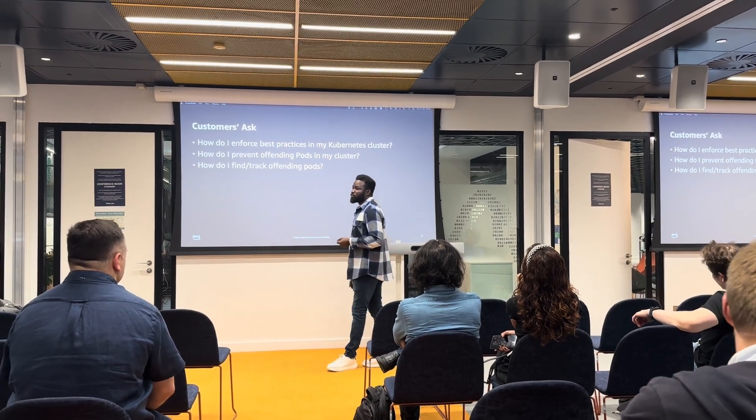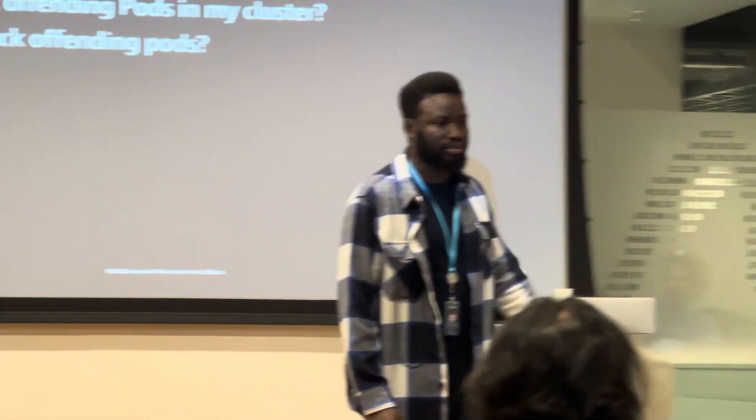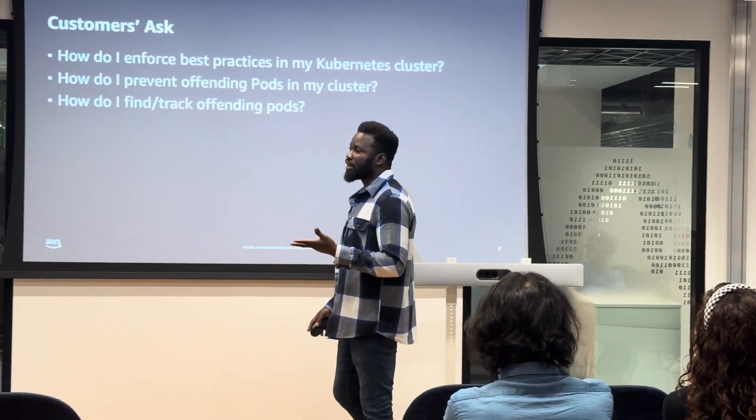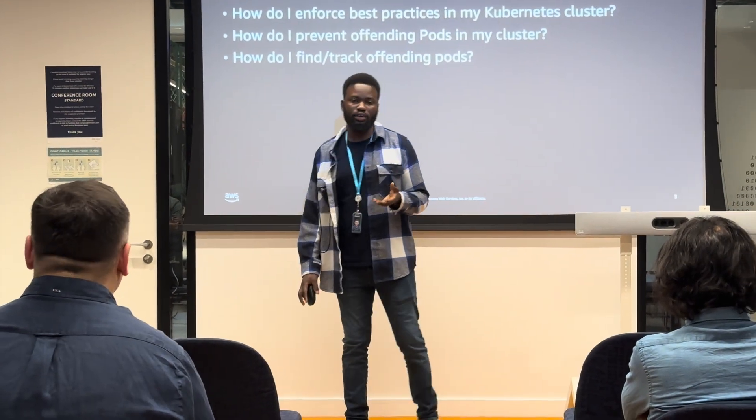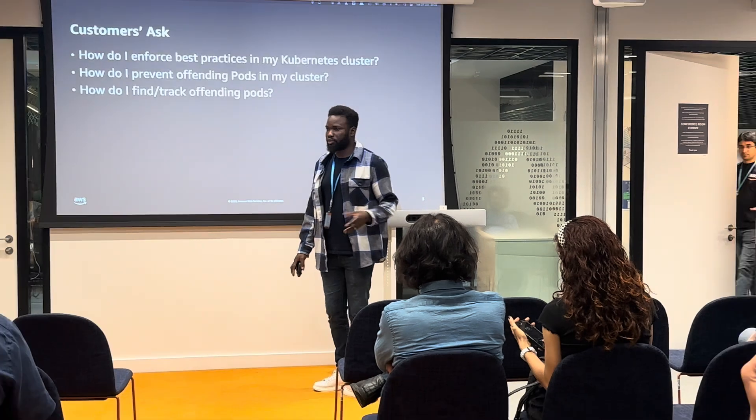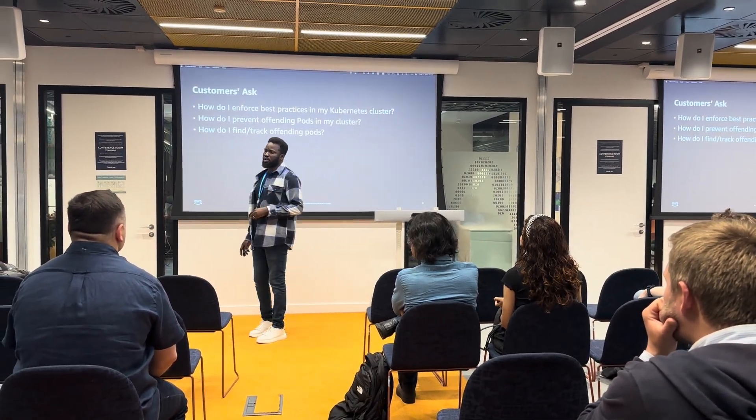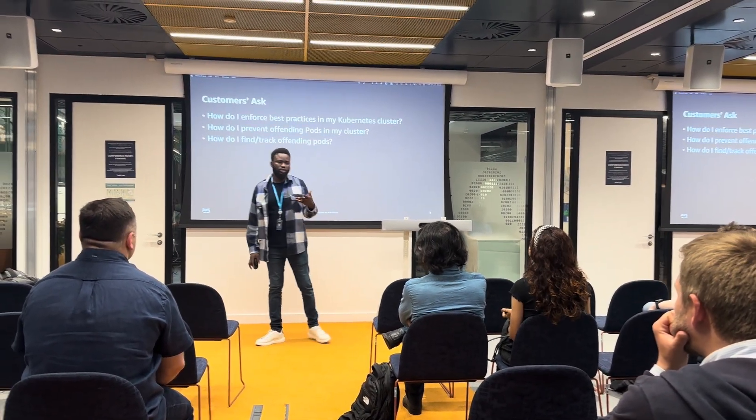In my many interactions with EKS customers or Kubernetes customers generally, one of the common tasks I've engaged customers with are questions you can see on the board. Customers ask: how do I enforce best practices in my EKS cluster? Or how do I prevent an offending pod? The first time I heard the word 'offending pod' I thought, what's going on here? And the last common question is how do I find or track a resource?